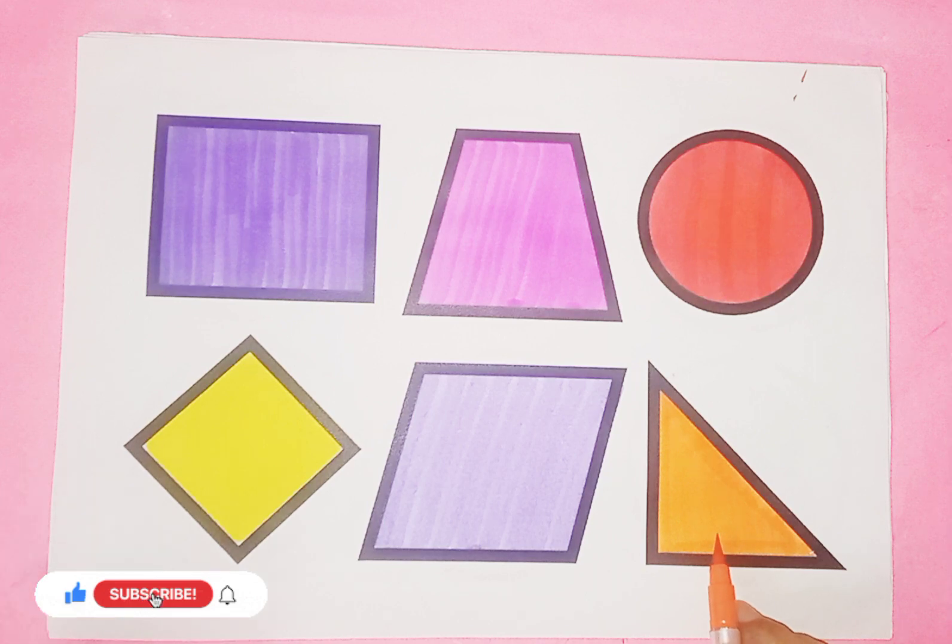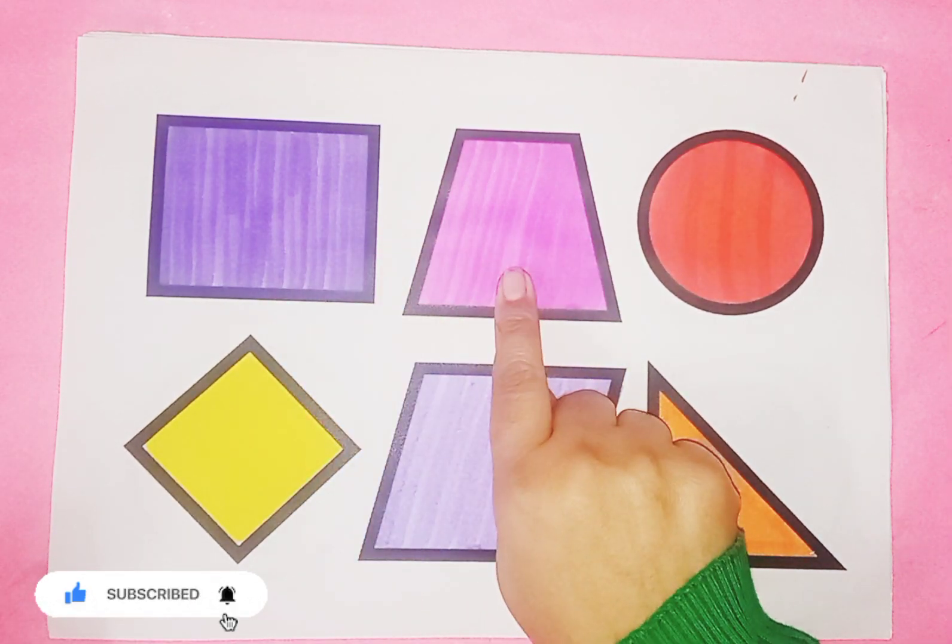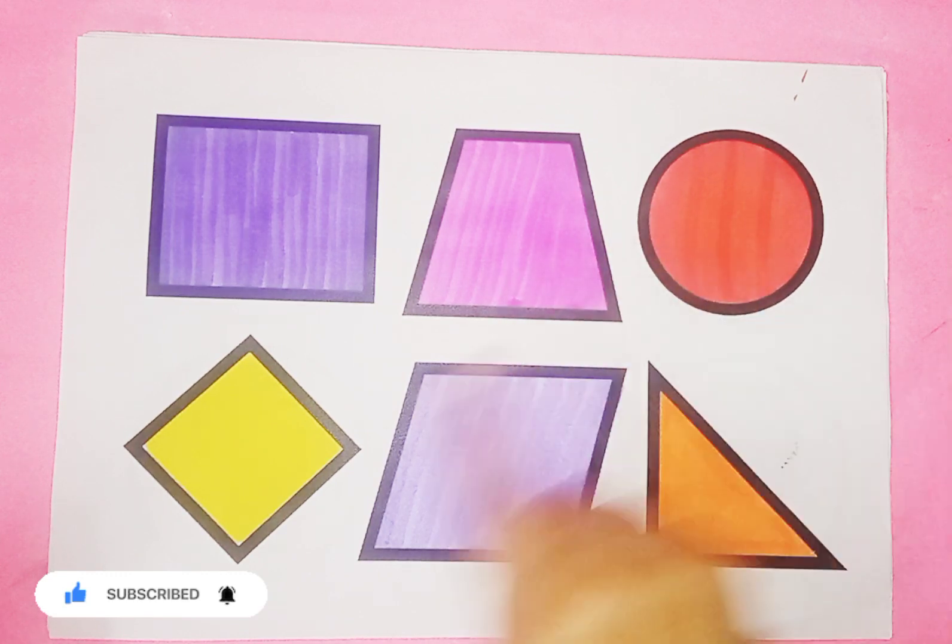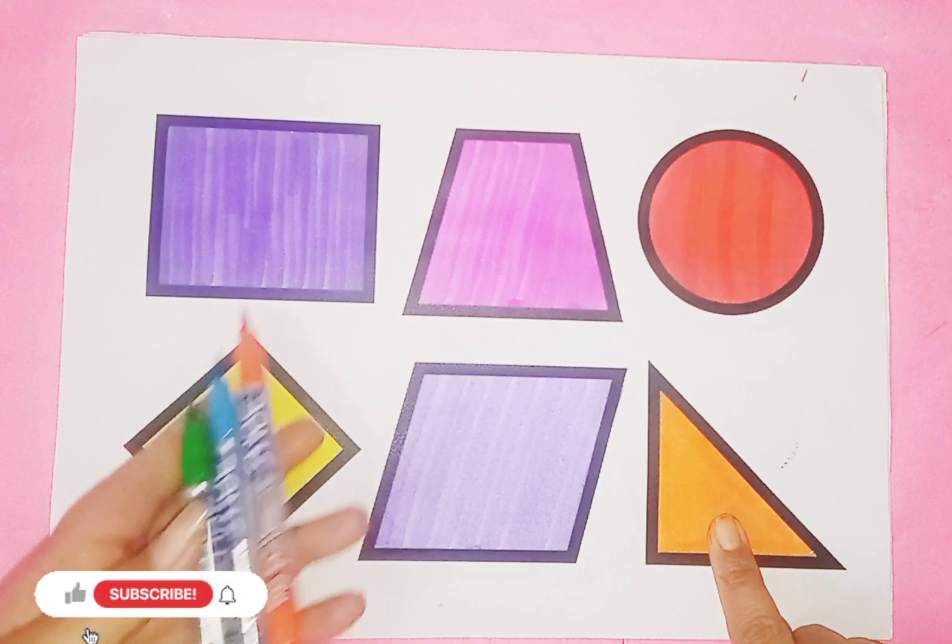So kids, today we learned some 2D shapes: right triangle, trapezium, circle, rhombus, parallelogram.